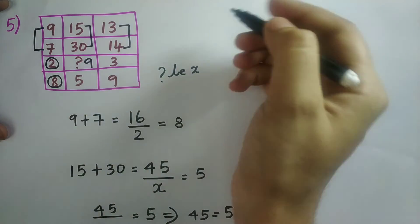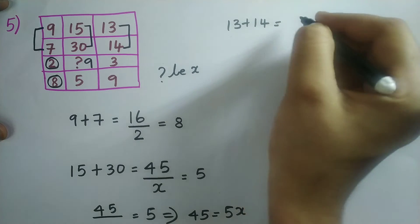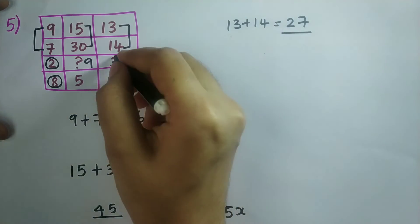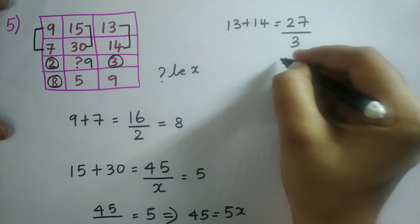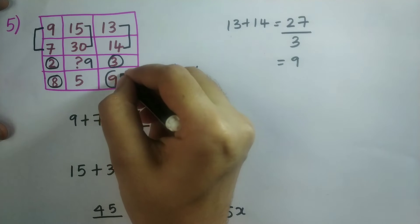Now let us check whether this logic is working even for the last column. I should add the first two numbers. So 13 plus 14 which is equal to 27. And I should divide by this number.